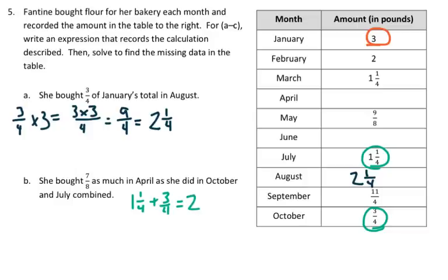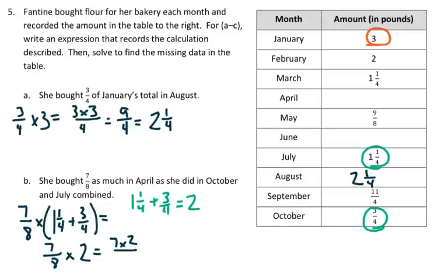So I can write this down using my parentheses as 7/8 times (1 and 1/4 plus 3/4), which equals 7/8, and I did my work already, so the answer is 2, which equals 7 times 2 over 8, which is 14.